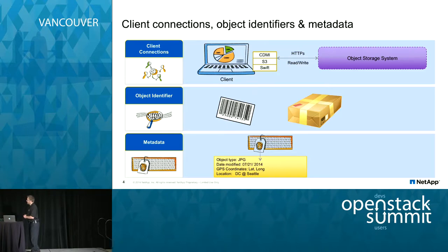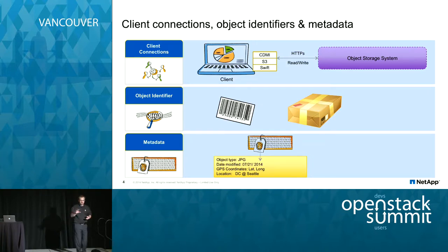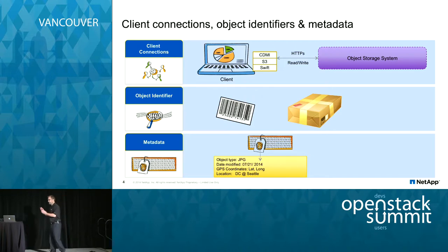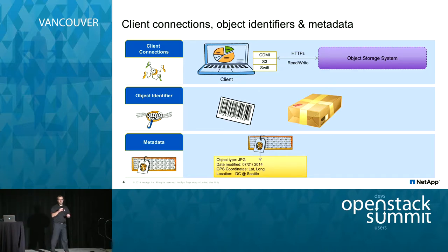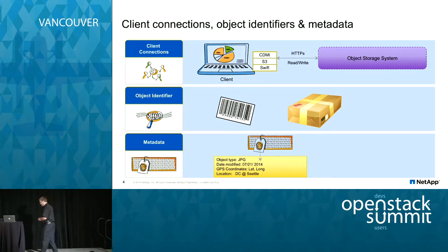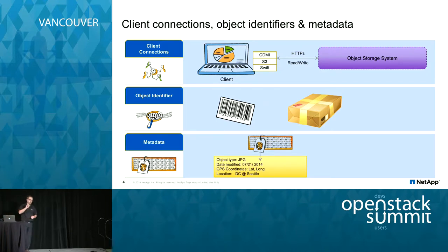The second dimension is how you address data inside the storage infrastructure. With block, you need to know the sector on the drive. With file, you need to know the server or NAS storage system, an IP address, a share name, a full directory structure down to the subdirectory, and the filename with extension. With an object system, you only need the object ID — that's it, plus one IP address.